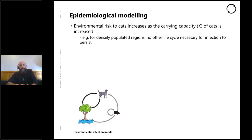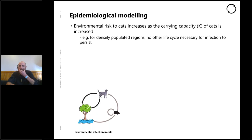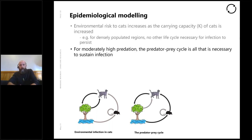Some important findings from this modeling: for very densely populated cat regions, no other life cycles are necessary — you only need the cat-environment cycle and you'll still have continuous transmission. Environmental risk to cats increases as the carrying capacity and density of cats increases, so the more cats that exist in an area, the greater the risk to the environment and back to cats. That's pretty obvious.